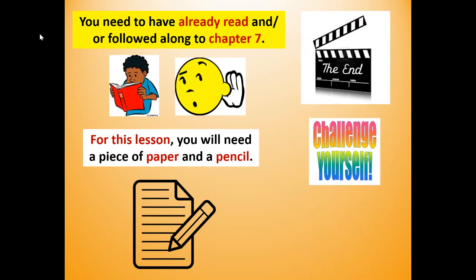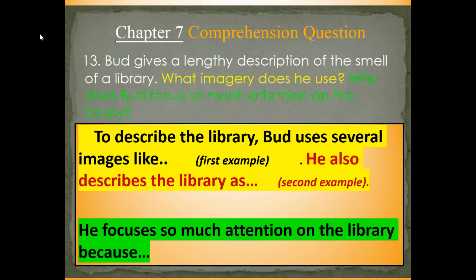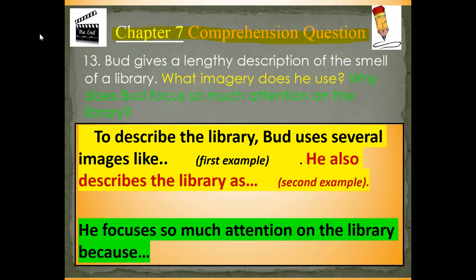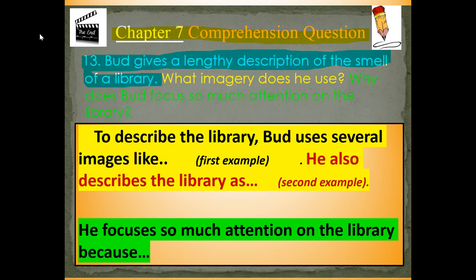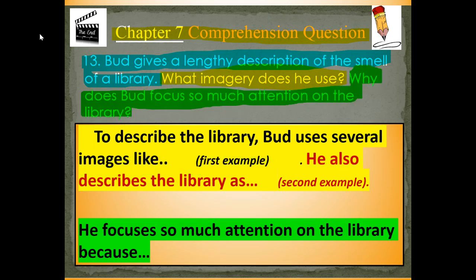At the end of this lesson, you're going to challenge yourself and work your brain and answer this comprehension question for Chapter 7. It says: Bud gives a lengthy description of the smell of the library. What imagery does he use? Why does Bud focus so much attention on the library? For this question, there are several parts, and I've given you sentence frames to answer each part of the question.